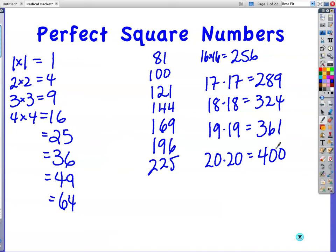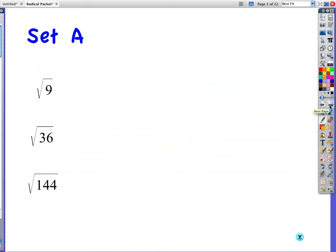Okay, let's apply that. Set A. We're going to do the reverse now. So when you have a square root, the root is like the side length. So the area of the square is 9. What's the length of the side? 3. So what is the root, or the square root of 9? 3. What is the square root of 36? 6, because 6 times 6 gives you 36. Square root of 144 is 12, because 12 times 12 gives you 144.